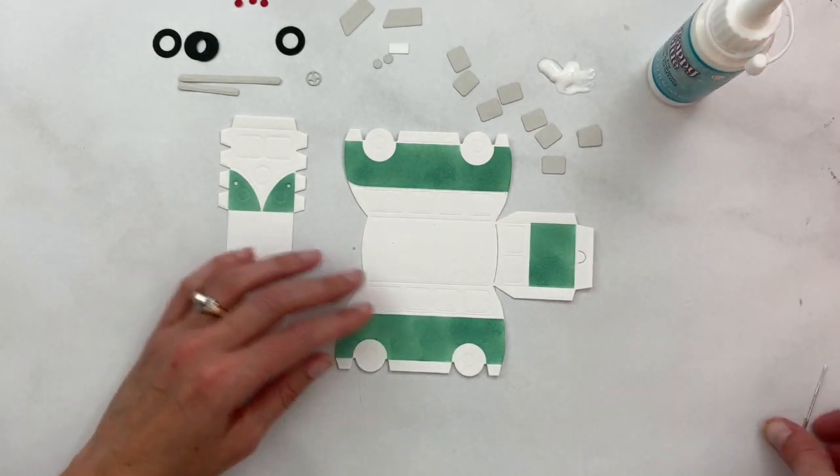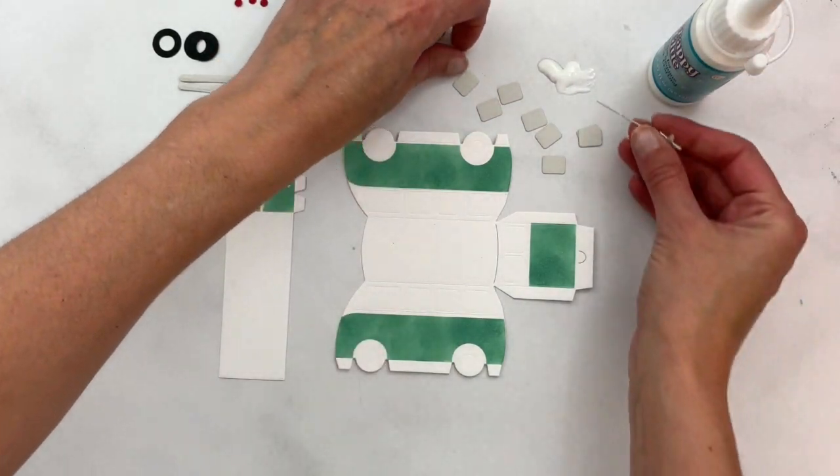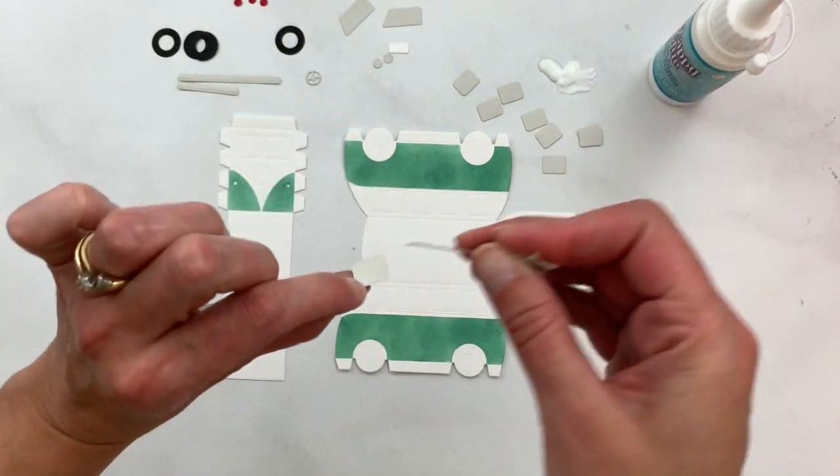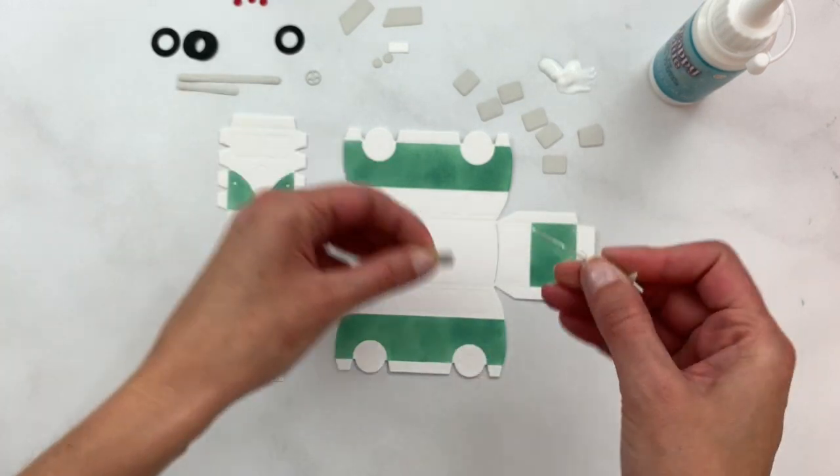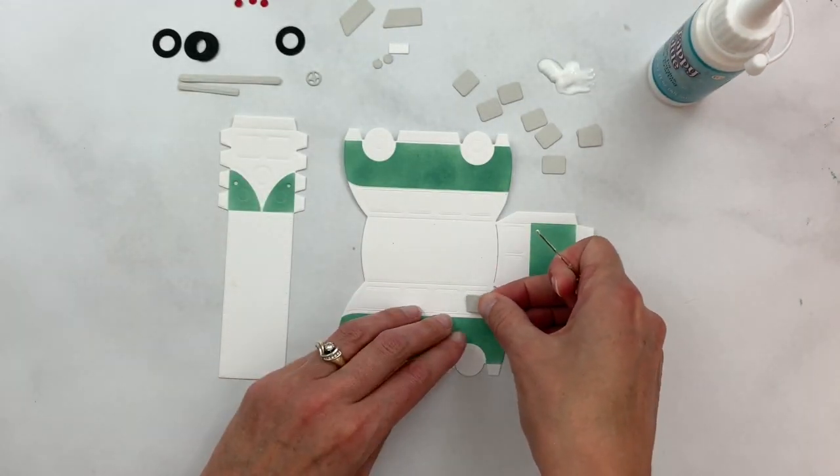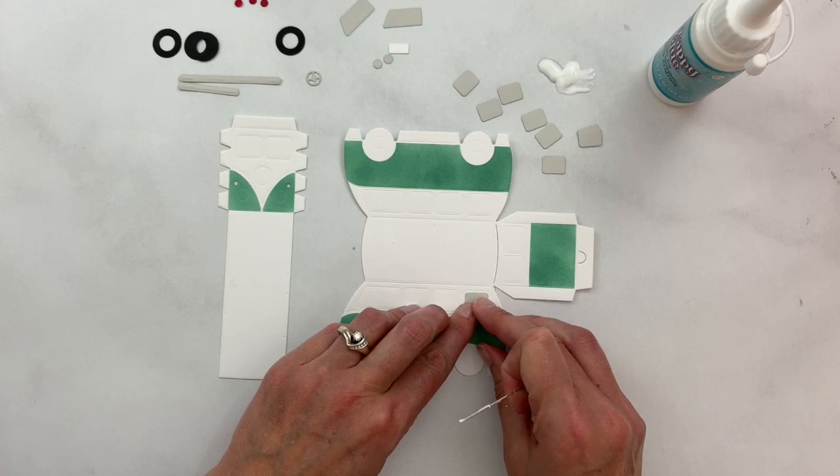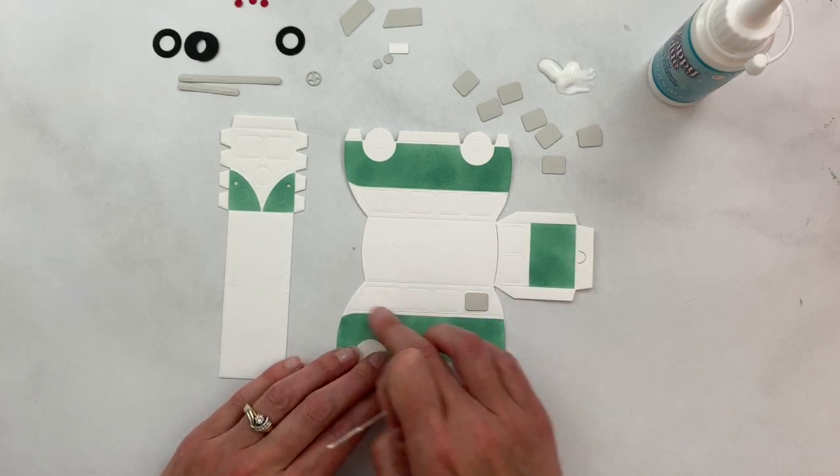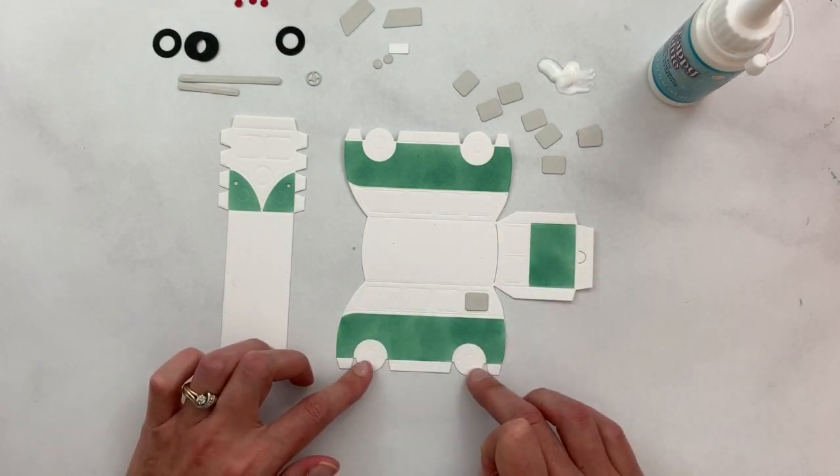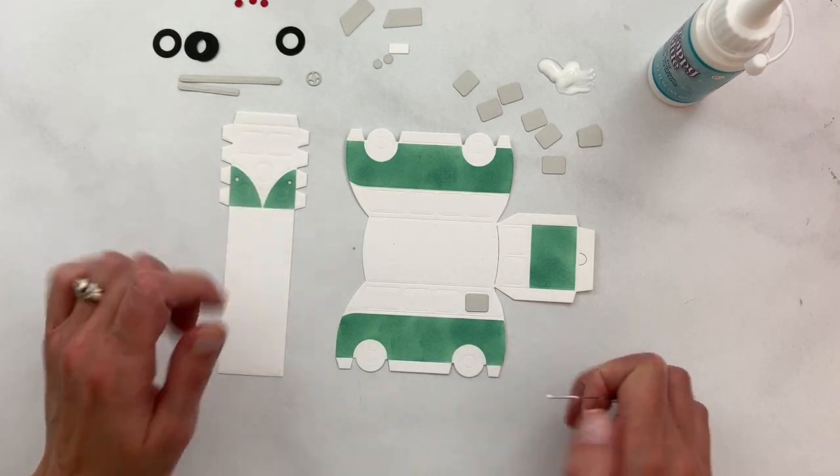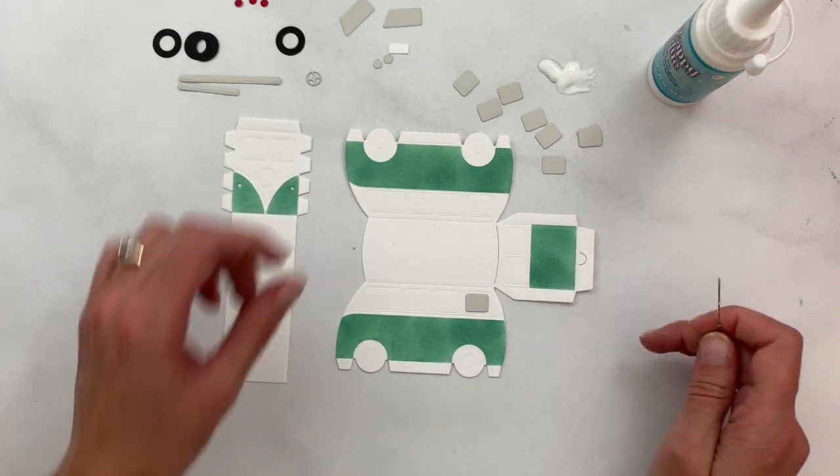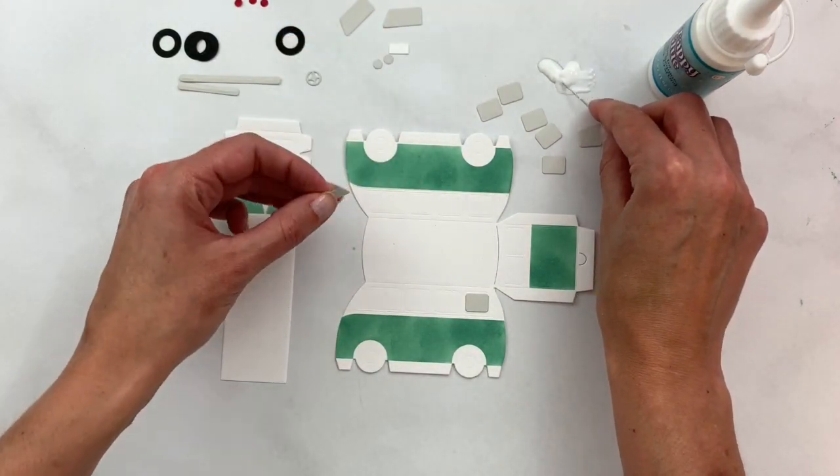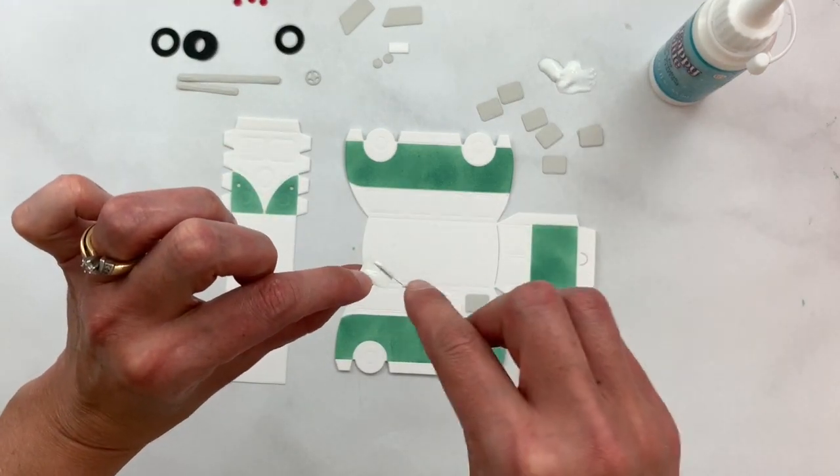So now before we get to assembling it, I'm going to go ahead and add all of my little details - all of the windows and the tires - and just go ahead and get those all in their places. You can see the score lines outline where the windows need to go as well as the wheels and the hood ornament and the headlights. So I'm just going to go ahead and do that and I'll speed up the video while I go ahead and do that.